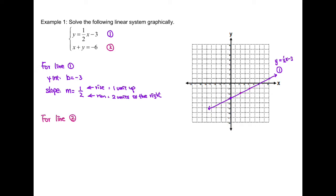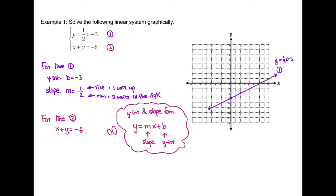For line 2, the equation is not in slope and y-intercept form. So first, we have to isolate for y by subtracting x on both sides. Then we can define the y-intercept, which is the constant term, which is negative 6. And then we have to find our slope, which is the coefficient of the x term, which is negative 1.